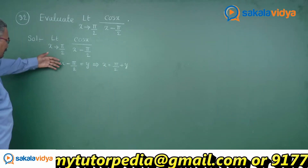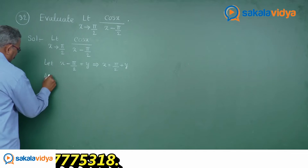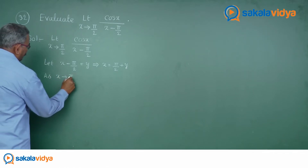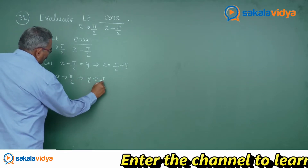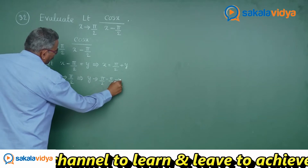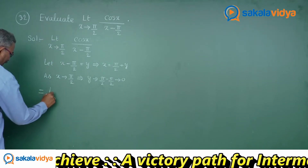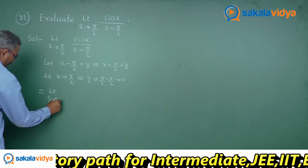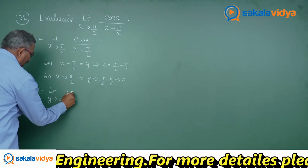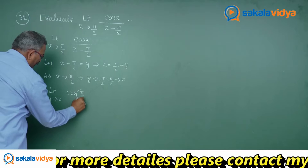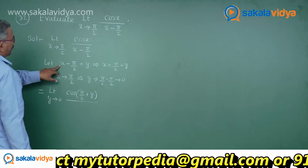In accordance with this substitution, we need to change the limit also. As x approaches π/2, y approaches (π/2 minus π/2), whose value is 0. So this can be rewritten as: limit y approaches 0, with x replaced by π/2 plus y. So we have cos(π/2 plus y) divided by y, since x minus π/2 equals y.